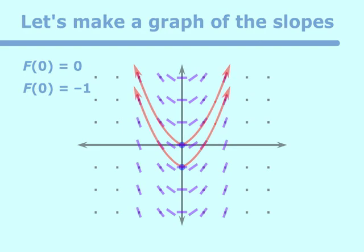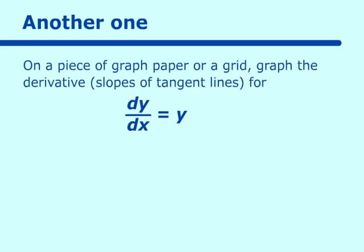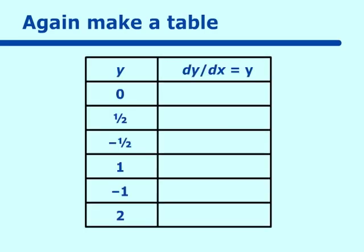Let's try another slope field graph. This one is dy/dx is equal to y. Now this looks very similar to the x one, but it's going to look a little bit different when we finish. Again, we have to make the table. If y is equal to 0, dy/dx will be equal to 0. And if y is equal to negative one half, dy/dx is equal to negative one half, and so forth all the way down the table.